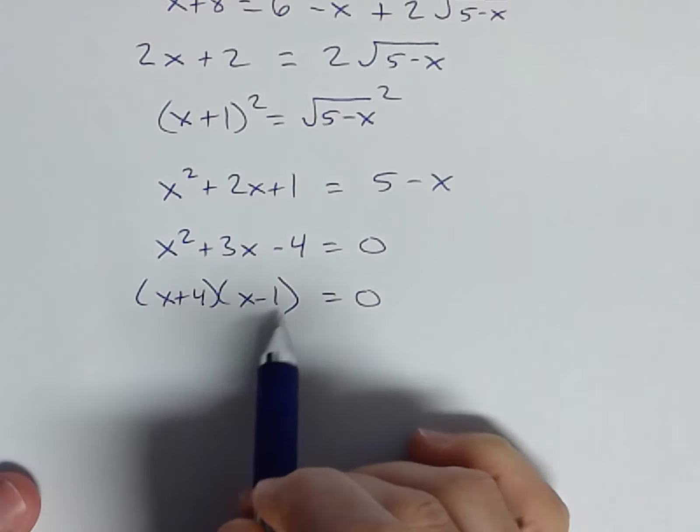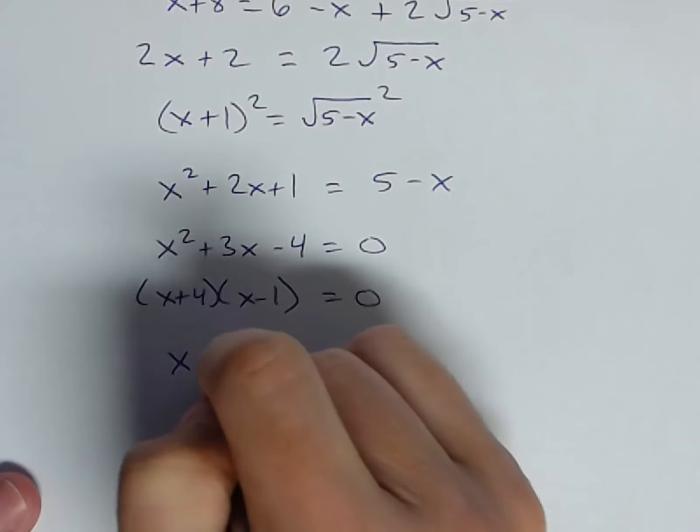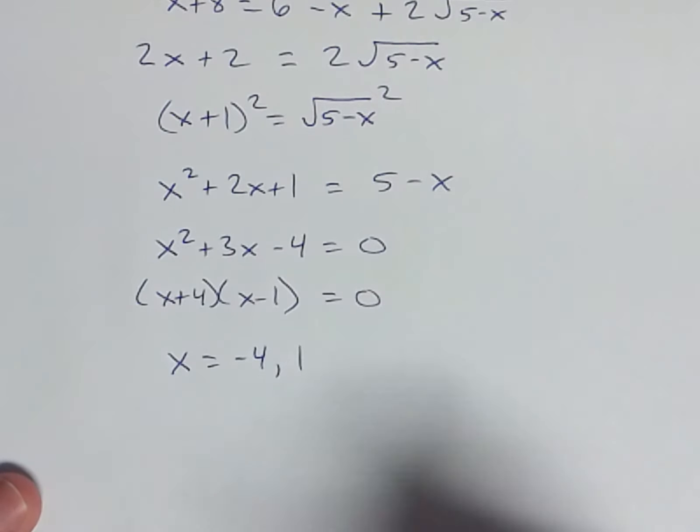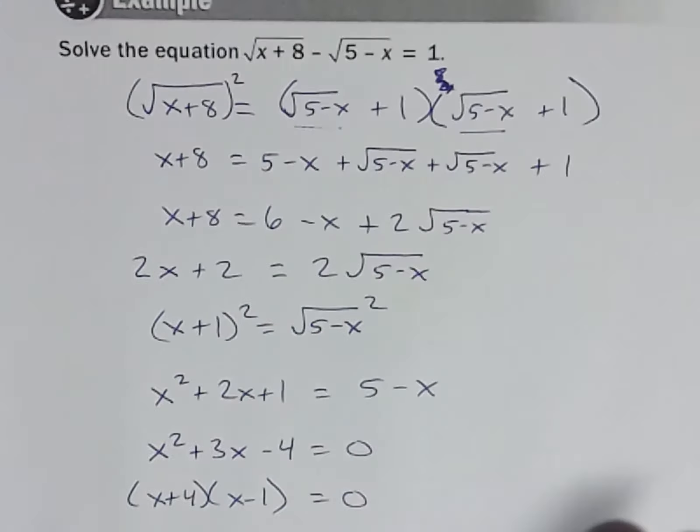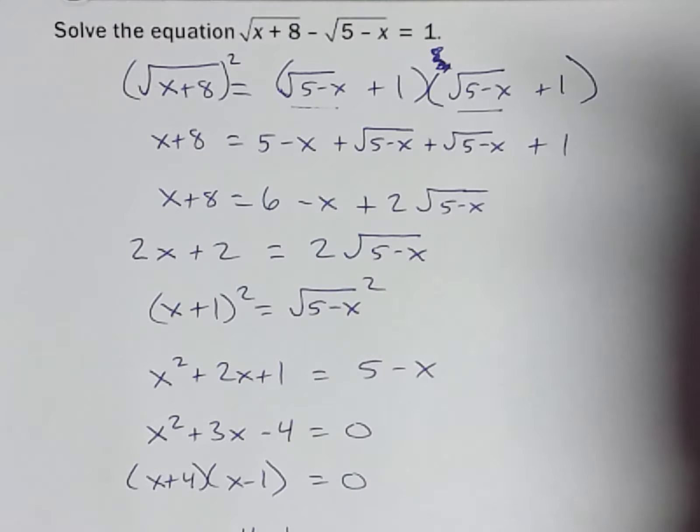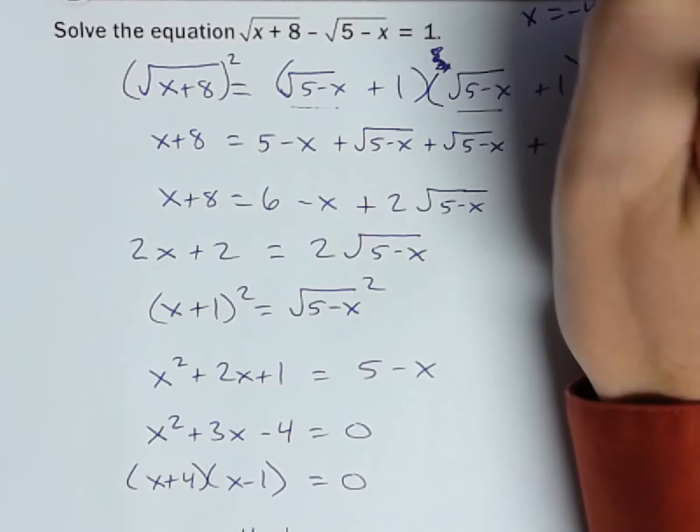Let me check that. 4x minus 1, yeah that'd be 3. And okay. So x could be negative 4 or 1 according to that quadratic. But remember, we need to go check way back in that original expression. And so let me just write it up here. So x equals negative 4 or 1.